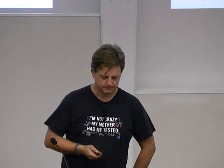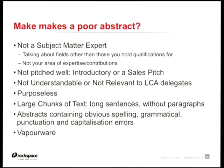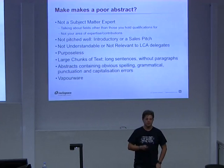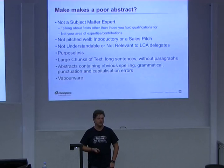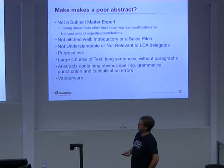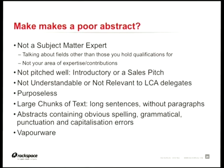What makes a poor abstract? First, not being the subject matter expert. Even if Michael here is a great speaker, if he talks about the latest techniques in cavity prevention in dentistry, no one will come. Within technology, the same applies — even the world's best kernel developer needs to prove to the papers committee they know what they're talking about if they propose an HTML5 talk. Being an expert in one area doesn't qualify you to speak on all areas.